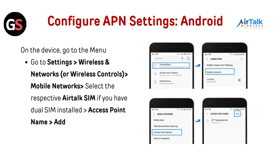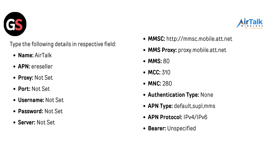Configure APN settings for Android. On the device, go to the menu, go to settings, then wireless and networks or wireless controls, mobile network, select the respective Airtalk SIM if you have dual SIM installed, access point name, then add. Type the following details in respective fields.